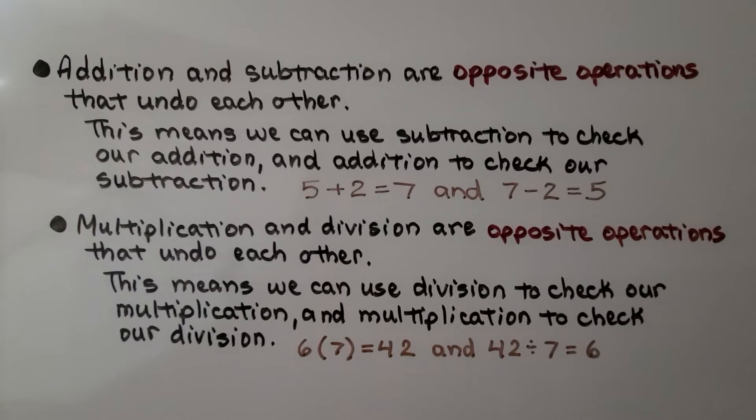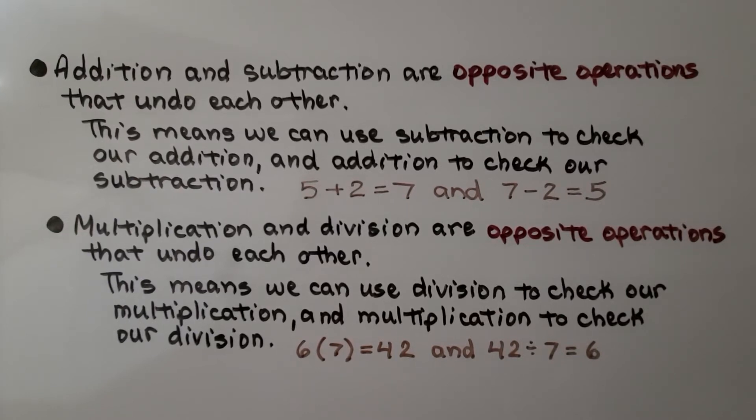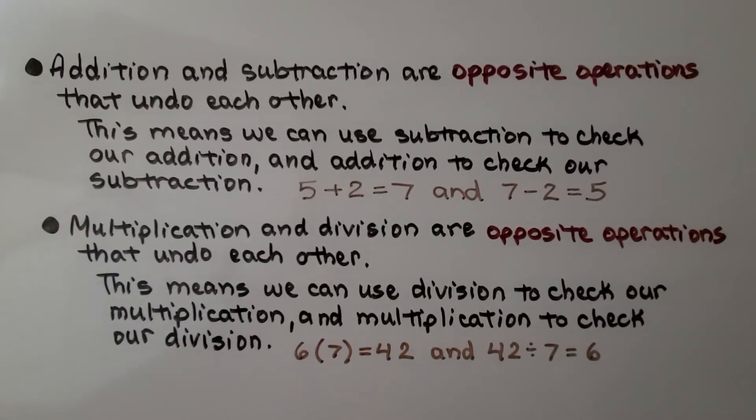Addition and subtraction are opposite operations that undo each other. This means we can use subtraction to check our addition and addition to check our subtraction. And multiplication and division are opposite operations that undo each other. This means we can use division to check our multiplication and multiplication to check our division.